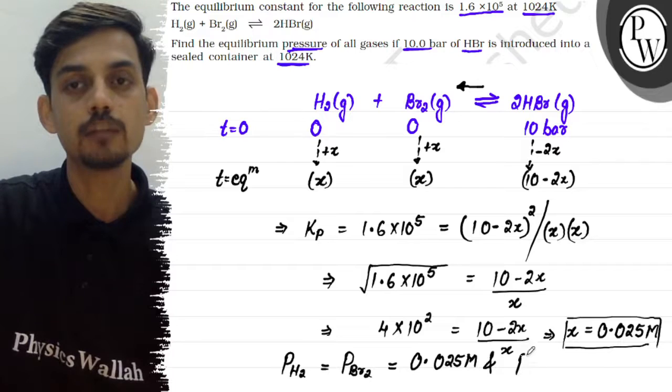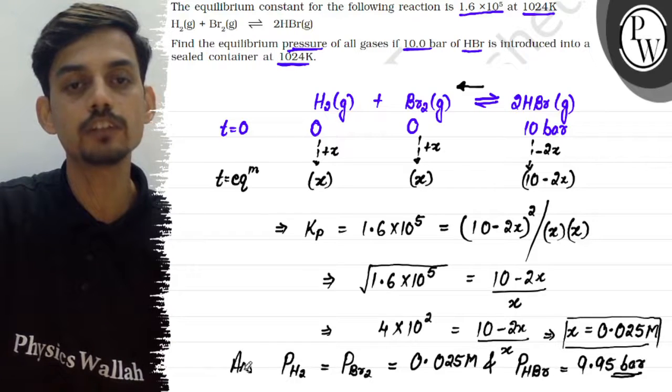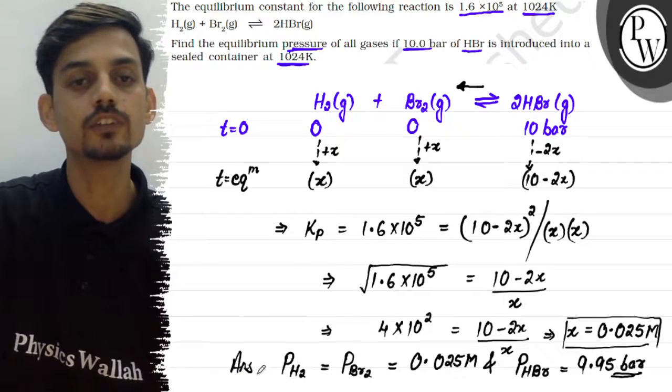The equilibrium partial pressure of HBr is 10 - 2x, which equals 9.95 bar. These are all the equilibrium partial pressures of each component in the question.